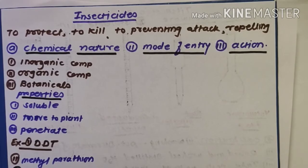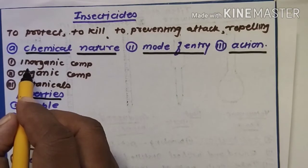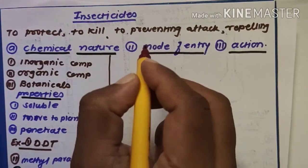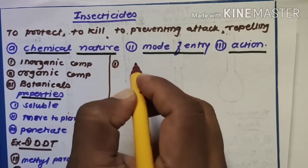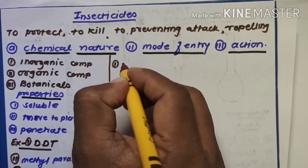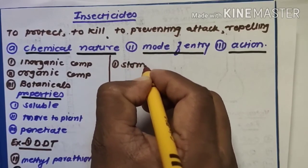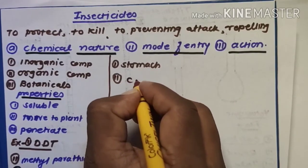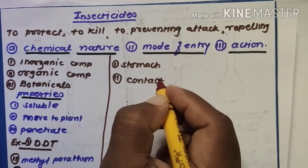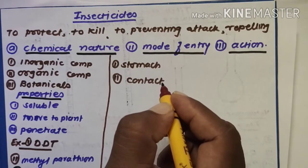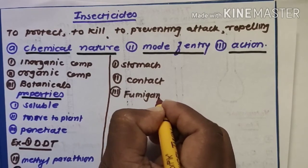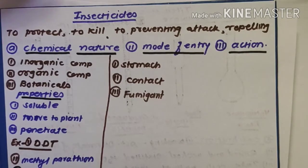Insecticides are again subdivided based on mode of entry into three main subclasses: the first one is stomach insecticides, the second is contact insecticides, and the third is fumigants. These are the three subclasses of the mode of entry classification.